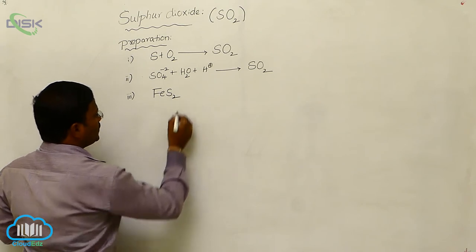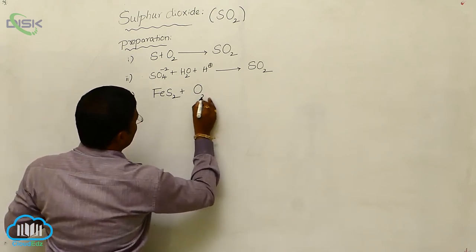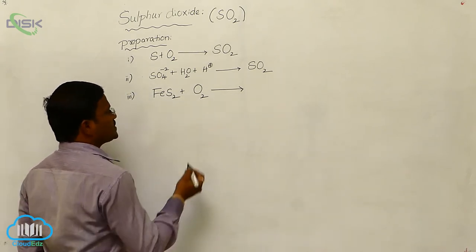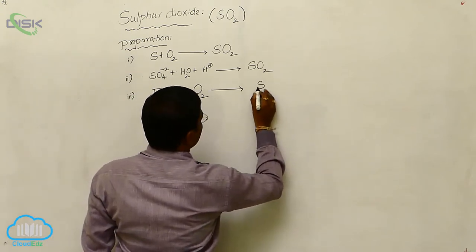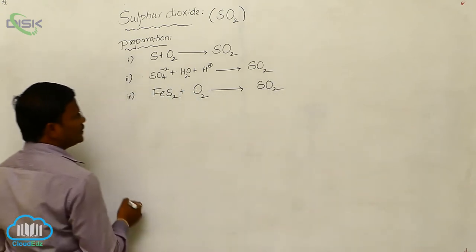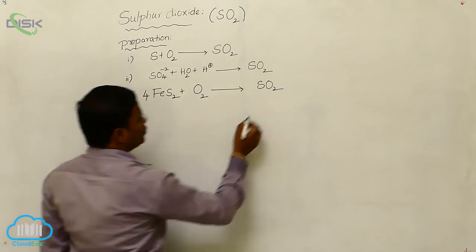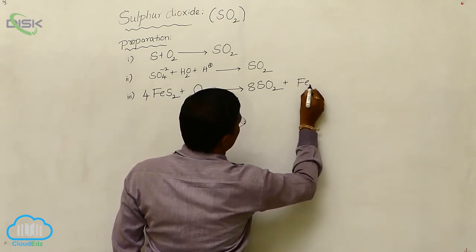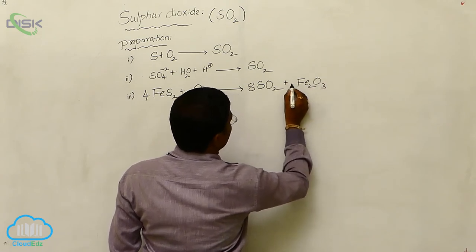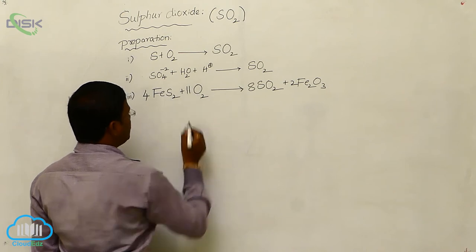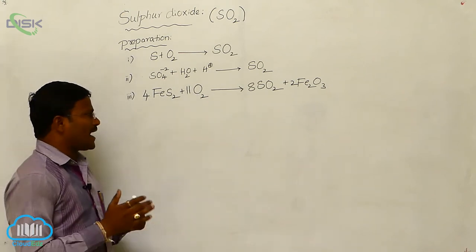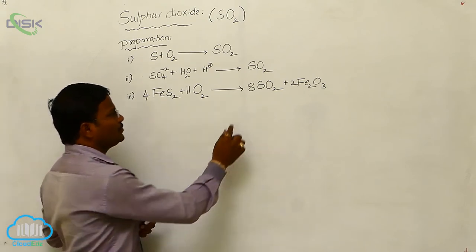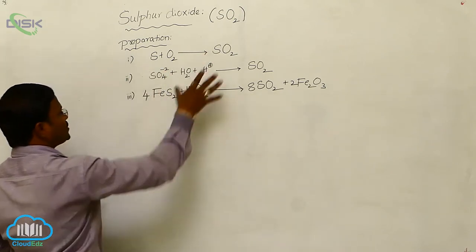The sulfate ions — iron sulfate — when undergoing oxidation, that is, addition of oxygen to iron ions in its sulfate form, produces sulfur dioxide. The balanced equation: 4 FeS₂ plus 11 O₂ gives 8 SO₂ plus 2 Fe₂O₃. So, 4 ferrous sulfide molecules oxidized with 11 oxygen molecules produce sulfur dioxide.